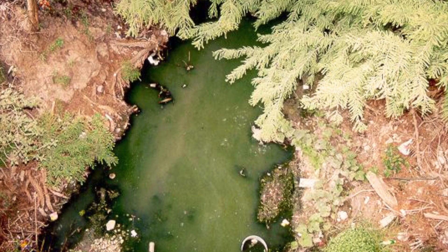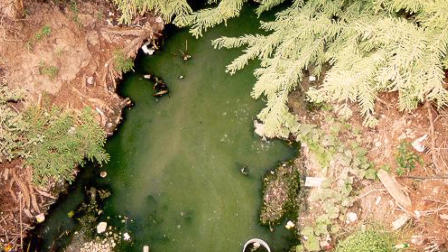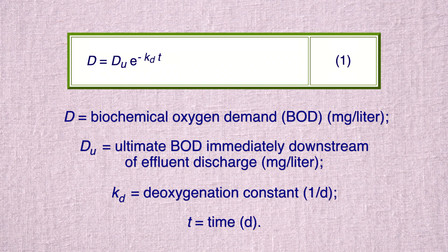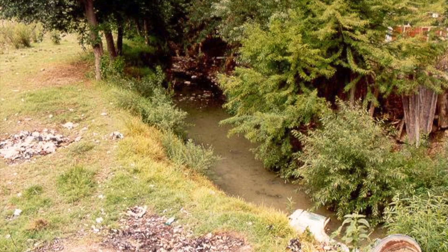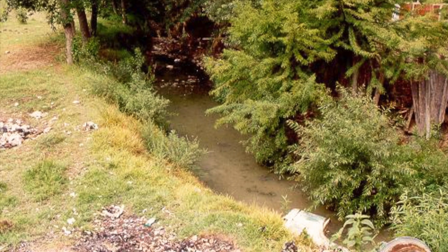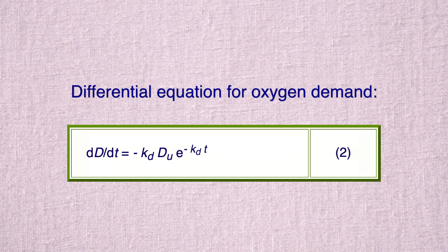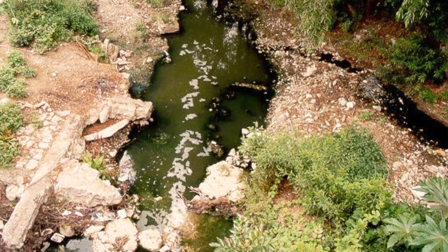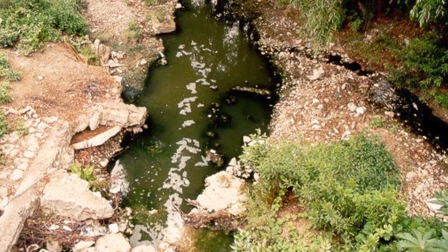The exponential decay of oxygen demand may be modeled as follows. The differential equation for oxygen demand is given, and using the chain rule, the oxygen demand equation is converted to the spatial domain.